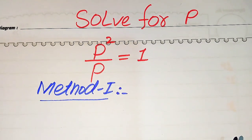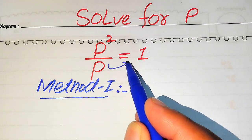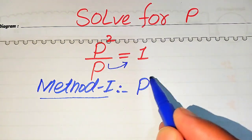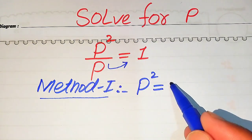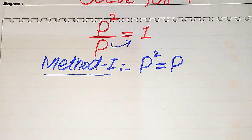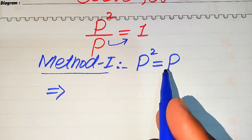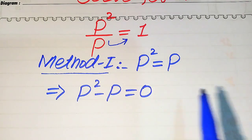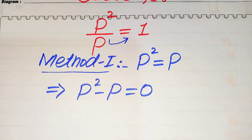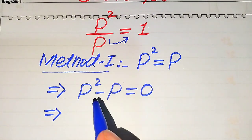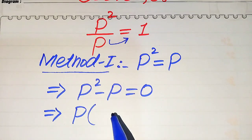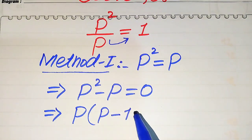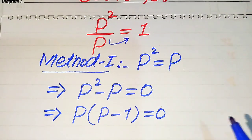In the first method, we move p to the right hand side — p is divided on the left hand side, so when moved to the right it multiplies, giving p squared equals p times 1, which is p. In the next step we move p from the right hand side to the left, giving p squared minus p equals 0. Both terms involve p, so we take p as a common factor, giving p times (p minus 1) equals 0.